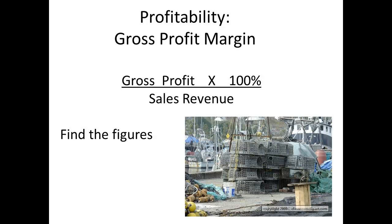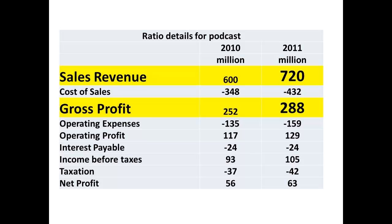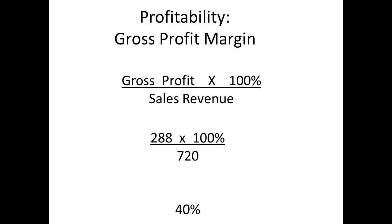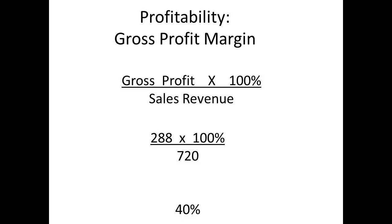The gross profit margin is given by dividing the gross profit by the sales revenue. Both figures are obtained from the income statement. Sales revenue is £720 million and the gross profit is £288 million. The calculation becomes 288 divided by 720, then multiply by 100 to get the percentage. We have a gross profit margin of 40%. This ratio measures profitability before taking into account any other expenses other than the cost of buying the goods that were sold. Competitors tend to be interested in this ratio since small changes can be significant.